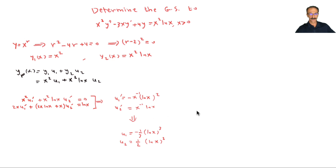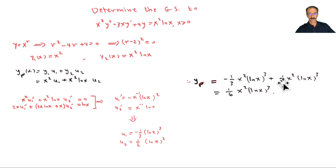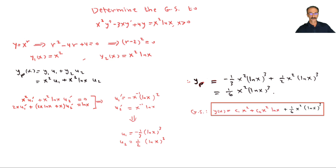Cramer's rule gives u₁' and u₂', which we integrate (setting integration constants to zero) to get u₁ and u₂. Substituting u₁, u₂, y₁, y₂ into the formula gives yp = -⅓x²·ln³x (plus additional terms from u₂y₂). The general solution is c₁y₁ + c₂y₂ + yp.